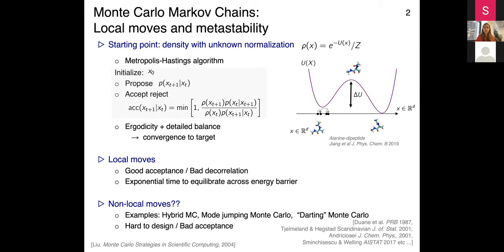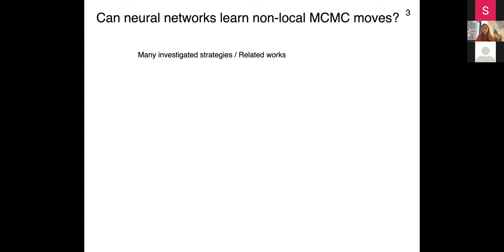A solution is to use non-local moves instead. There are lots of attempts in the literature to come up with smart non-local moves, but it's incredibly hard - it's hard to design a way of finding where to jump that is not somewhere nearby, and you generally get bad acceptance unless you have a lot of information about the problem and custom-design the jump. The question then becomes: can neural networks, which are becoming more and more useful in high-dimensional problems, learn precisely to help in this setting - to propose non-local MCMC moves?